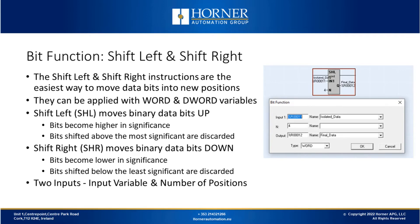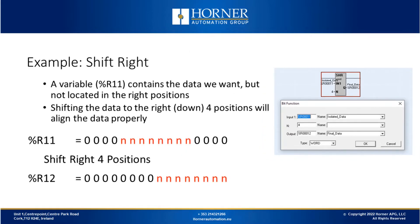Next let's look at the shift left and shift right functions. This instruction is used for moving bits into new positions in a word or double word type variable. Shifting left moves the binary data bits up so they become higher in significance; bits shifted above the most significant 16th bit position are discarded. The shift right instruction moves the bits down so they become lower in significance, and any bits shifted below the least significant position are discarded. You have two inputs: the first is the variable you're working on, and the second is the number of positions to shift.